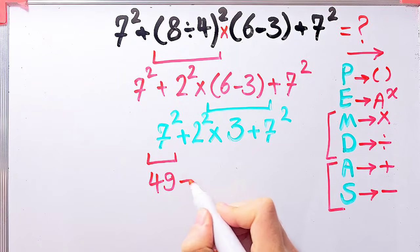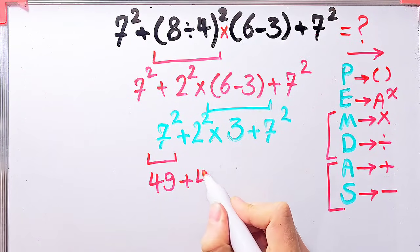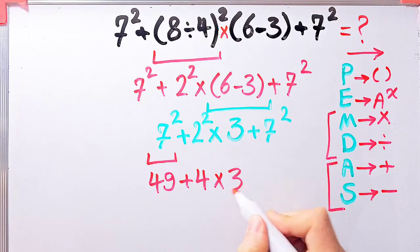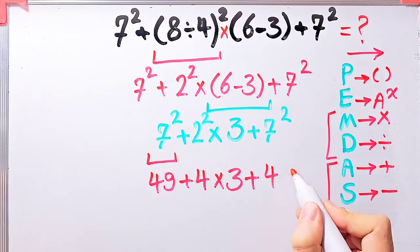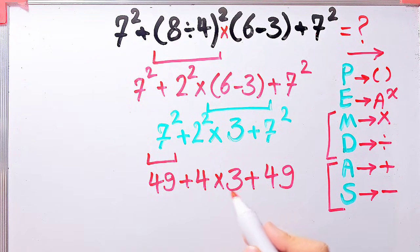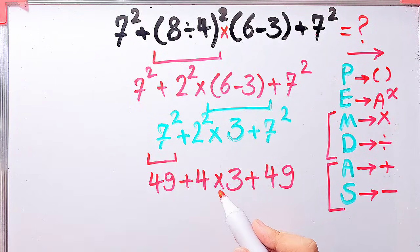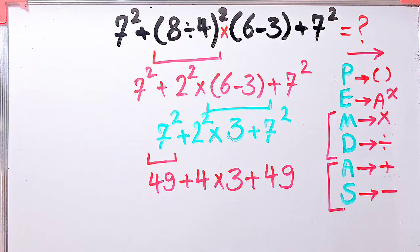Now we have exponents, addition, and multiplication. First we simplify the exponents: 7 to the power of 2 equals 49, and 2 to the power of 2 equals 4. So the question is 49 plus 4 times 3, then plus 49. Now we have addition and multiplication. First we simplify the multiplication because it has higher priority: 4 times 3 equals 12.